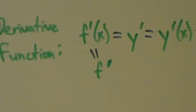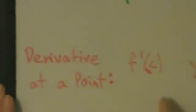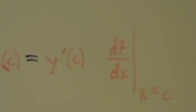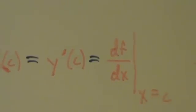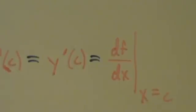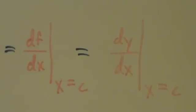What about the derivative at a point? For the derivative at a point, we have f primed of c — we've already seen that — but you could also say y primed of c. And this new one: you could say df dx evaluated at x equals c. This long vertical bar means evaluated at. So this just means find the derivative of f with respect to x, then evaluate at x equals c — just plug in c for x. And then we could also say dy dx evaluated at x equals c. So there are four different ways of expressing the derivative at a point.